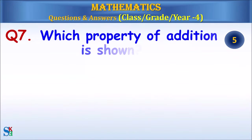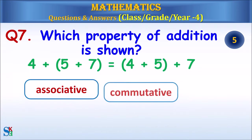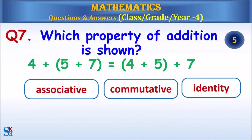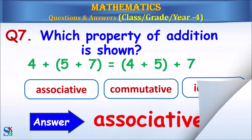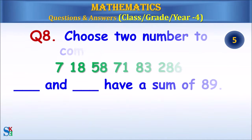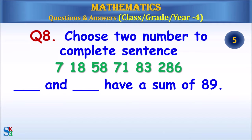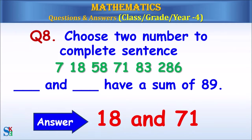Question 7: Which property of addition is shown? Question 8: Choose two numbers to complete sentence. The answer is eighteen and seventy one.